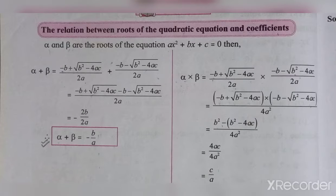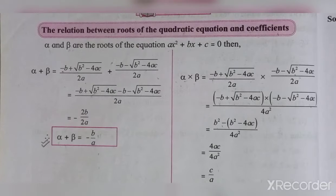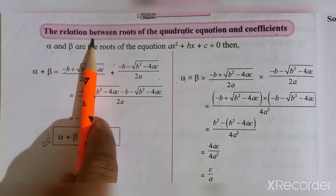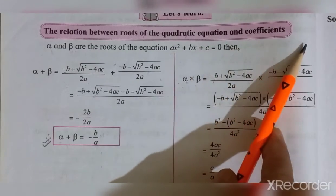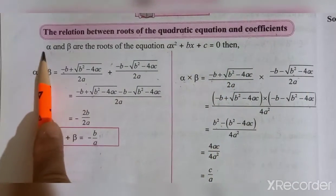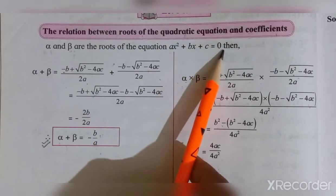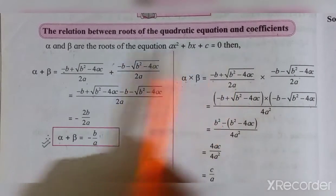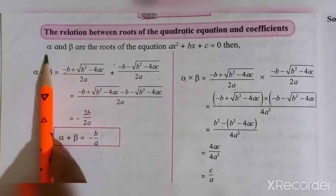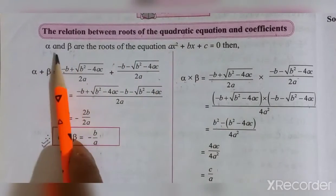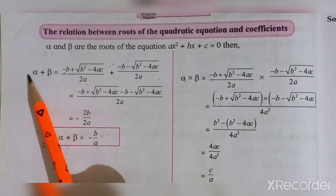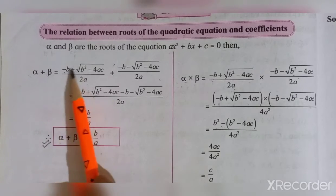Hi students, we are studying Chapter 2: Quadratic Equations. In this video, we are going to learn from textbook page 46. The topic is the relation between roots of the quadratic equation and coefficients. Students, see — alpha and beta are the roots of the equation x² + bx + c = 0.